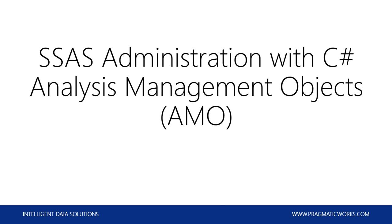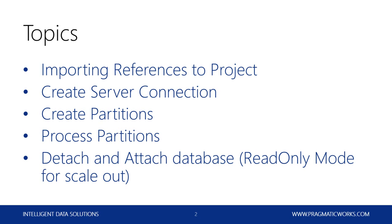It looks like we have some people who are more familiar with C#, but also quite a few who are relatively new. So as time allows, I'm going to spend a bit more time focusing on some of the more basic C# elements, as well as the actual SSAS AMO topic. What we're going to cover today: first, importing the references to the project so we can access AMO; then creating our server connection; creating partitions; processing those partitions; and detaching and attaching a database in read-only mode as an example of a scale-out operation. That's going to cover patterns you can follow even if you aren't detaching and attaching databases, and will show you how to execute XML/A on your server.